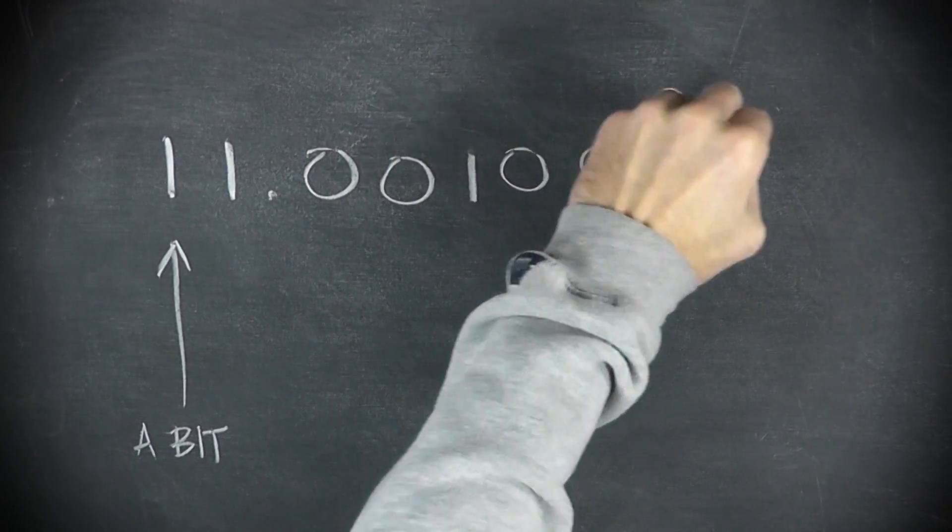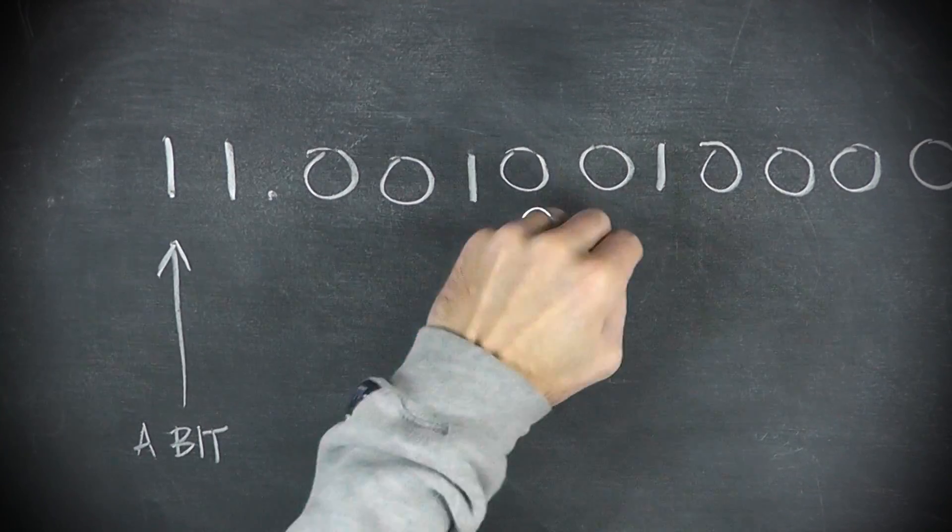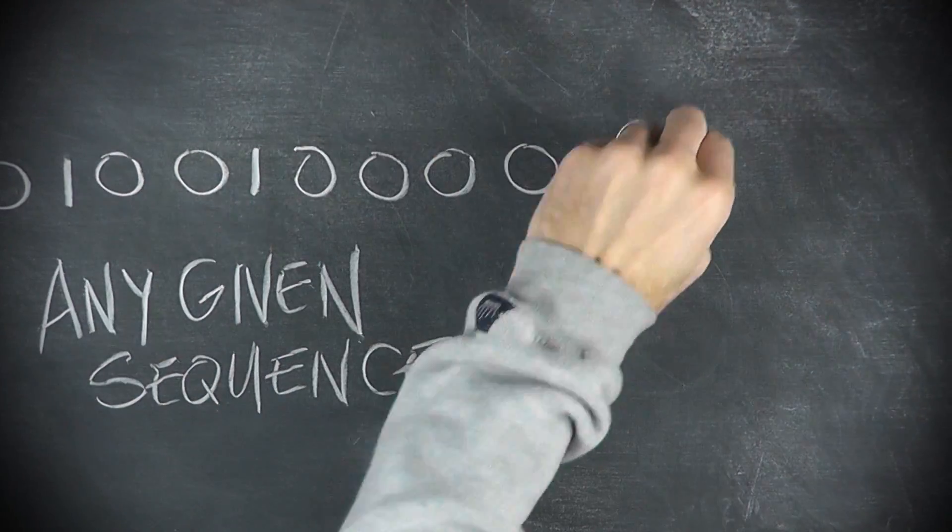Now let's switch to binary for a bit. Pi looks like this now. The digits are just zeros and ones, but they're still random and unending. And this means that any given sequence of digits will turn up if you look far enough down the line.